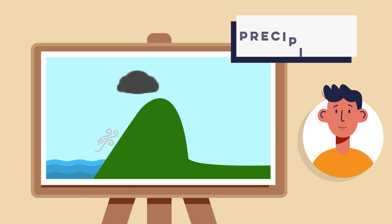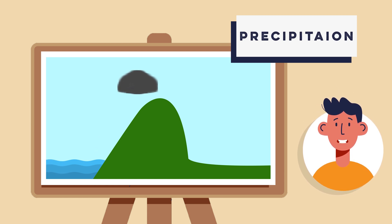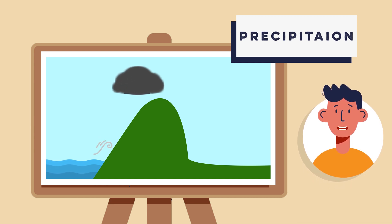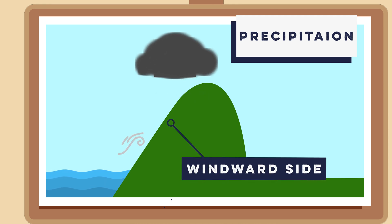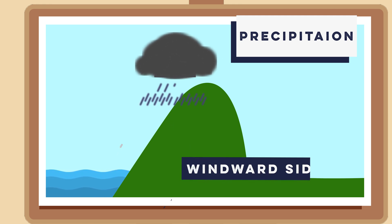Step four is precipitation. When the clouds can no longer hold the condensed water, precipitation occurs. This can be in the form of rain, snow or sleet depending on the temperature. The windward side of the mountain where the air rises receives the most precipitation.